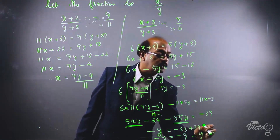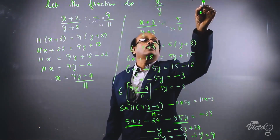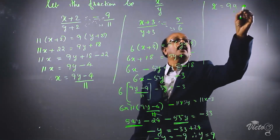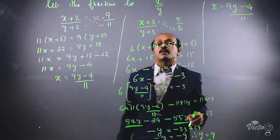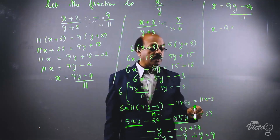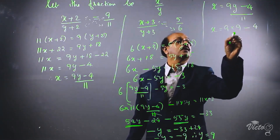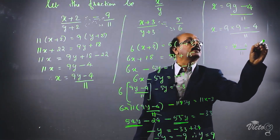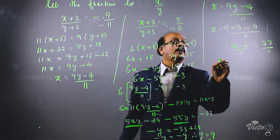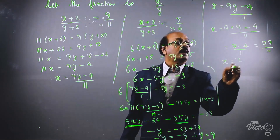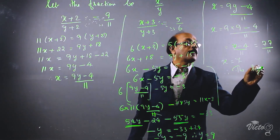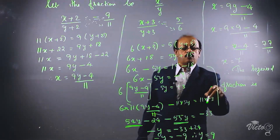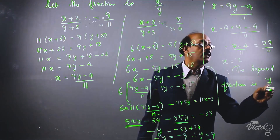The negatives cancel, giving y = 9. Now substituting back: x = (9y − 4) / 11 = (9 × 9 − 4) / 11 = (81 − 4) / 11 = 77 / 11 = 7. Therefore the required fraction is x by y, which is 7 by 9. The answer is 7/9.